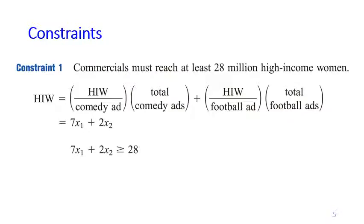So the first constraint, if you look at the problem description, it says that our commercials both in the comedy ad and football ad must reach at least 28 million high-income women. So for each comedy ad that we put, we get the attention of 7 million high-income women. So 7 million is just for one comedy ad. But remember that the total comedy ads that we are going to put on TV is X1, which means that we get the attention of 7 times X1 high-income women from the comedy ads.